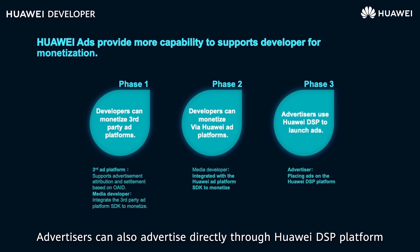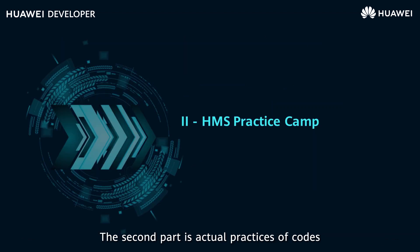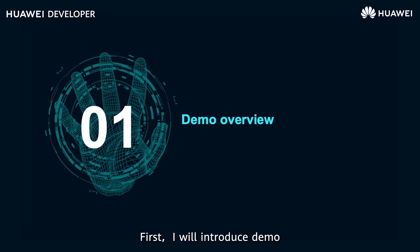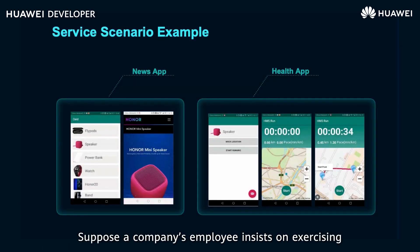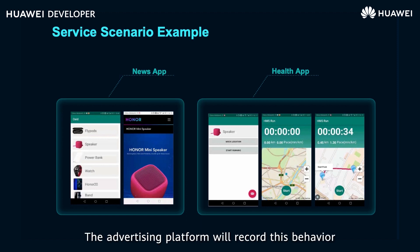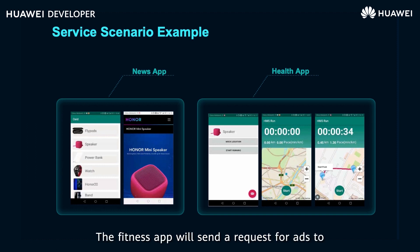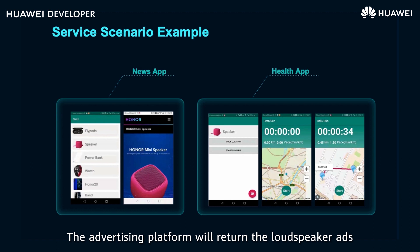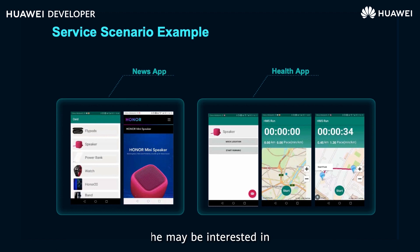Advertisers can also advertise directly through the Huawei DSP platform. Now for the second part — actual code practices. In the demo, suppose a company employee exercises on the way to and from work. While browsing a news app, he sees a loudspeaker advertisement, which the advertising platform records. When he returns home and opens a fitness app, the fitness app sends a request for ads to the advertising platform through OAID, and the platform returns a loudspeaker ad he may be interested in.